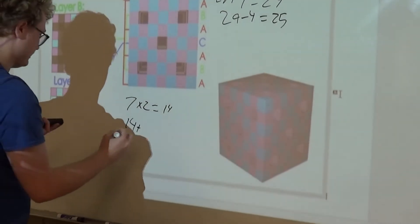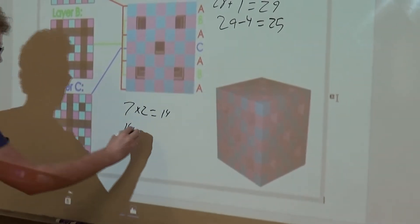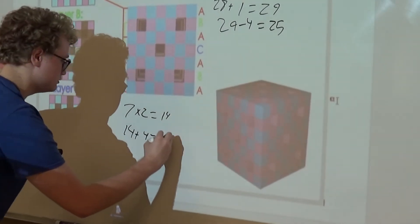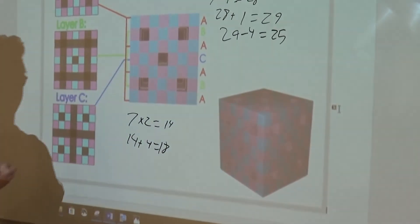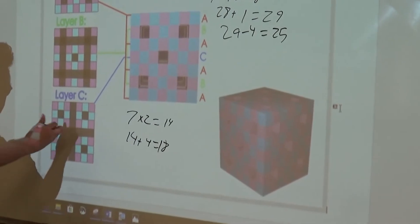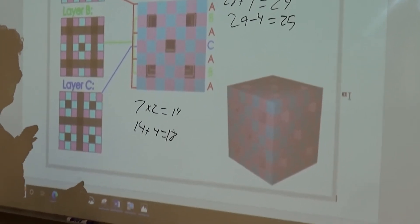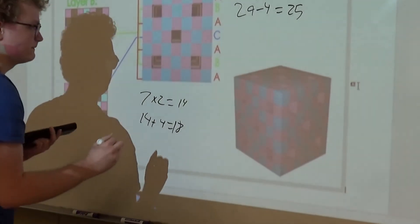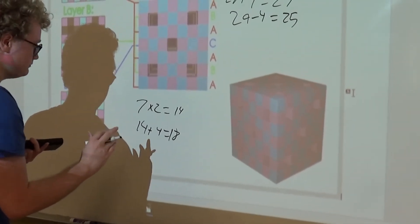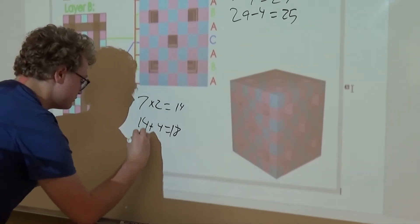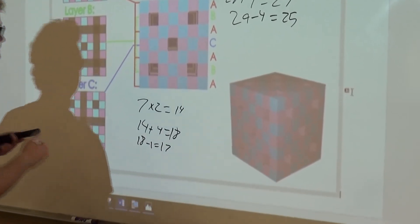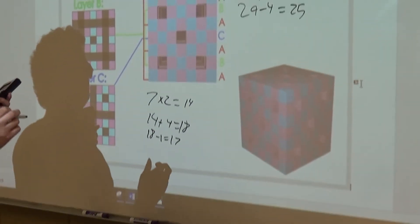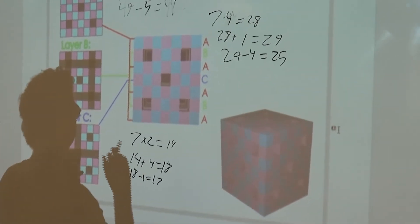And then we have 19. Then we have this hole in the center which intersects, so we subtract that from 18 to get 17.